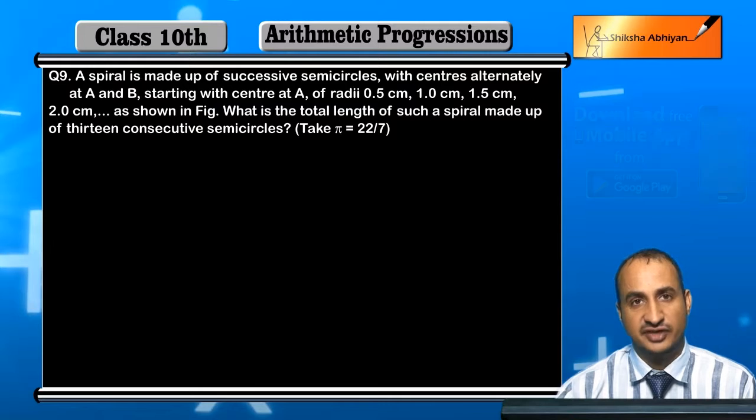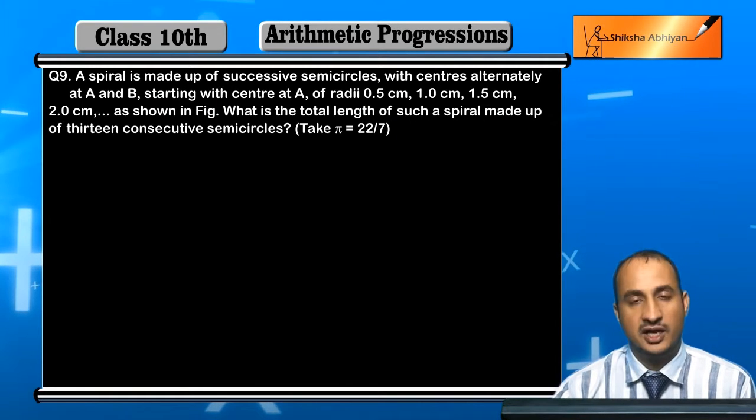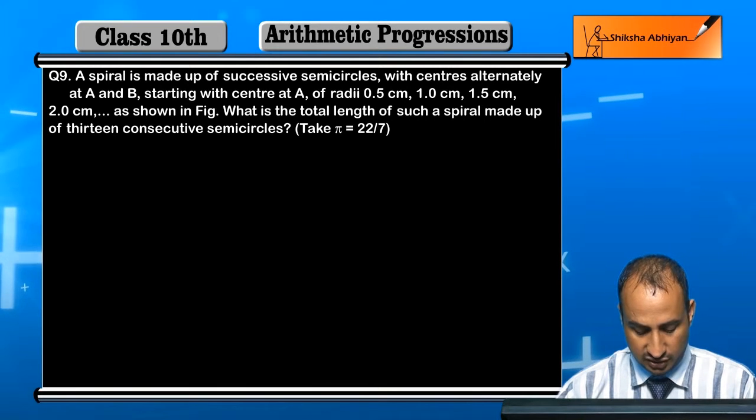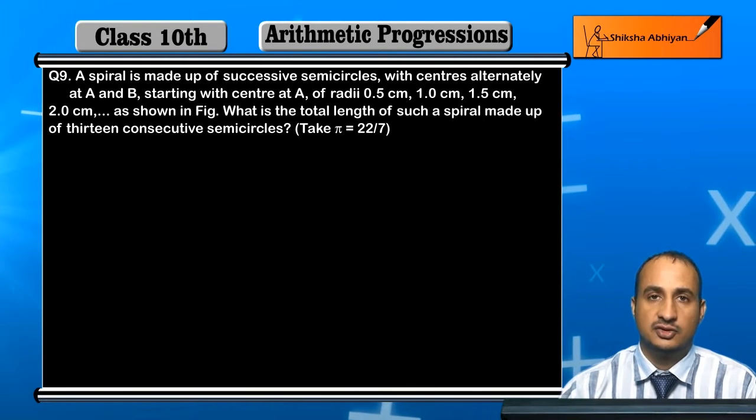As you can see in the figure, what is the total length of such a spiral? The total length is made up of 13 consecutive semicircles. You will have to tell us how much length it is.